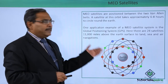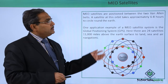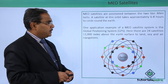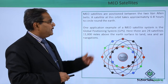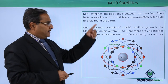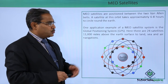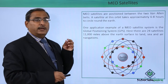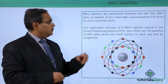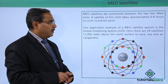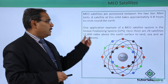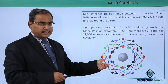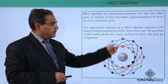The second category of satellites is the MEO satellites. MEO satellites are positioned between the two Van Allen belts. A satellite at this orbit takes approximately six to eight hours to circle around the earth. One application example of a MEO satellite system is the Global Positioning System, which we use on a daily basis — that is the GPS.